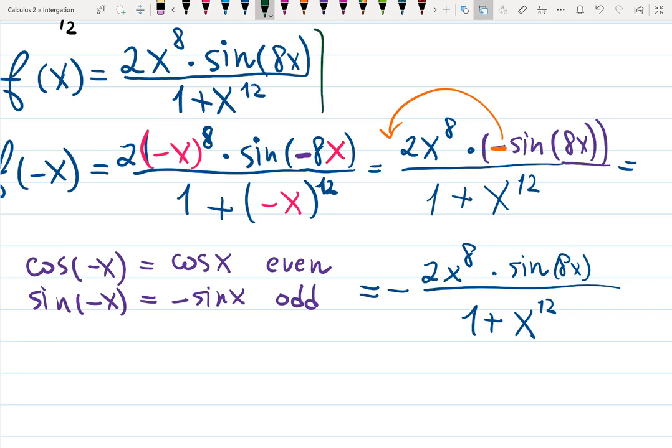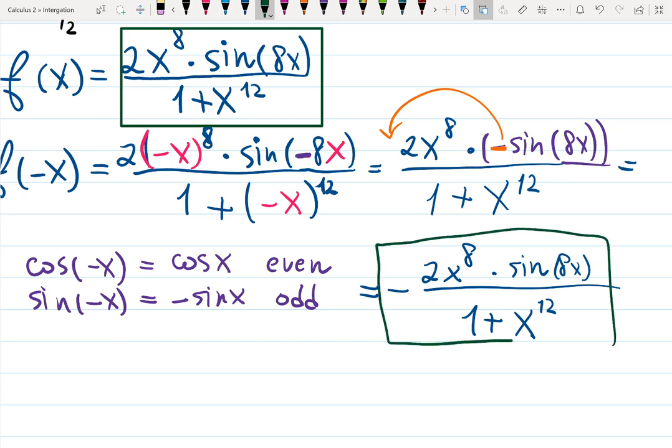And now compare the beginning and the end. What did we have at the beginning? This function in blue. What do we have at the end? This same function with a negative sign in front of it. It's exactly the same. Then I can conclude that this function is which one? The one that gives you a negative sign outside. So that's an odd function.